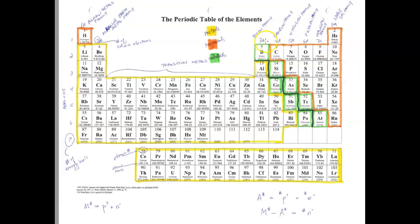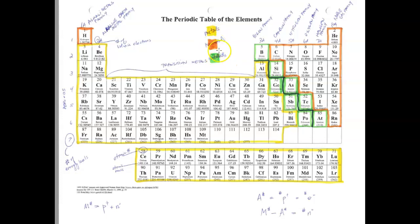First, when you look at your periodic table, elements are broken up into three different types based on their location on the periodic table, and you're going to color code that. The key shows yellow for metals, orange for non-metals, and green for metalloids. You can see non-metals are outlined in orange on both sides of the table.